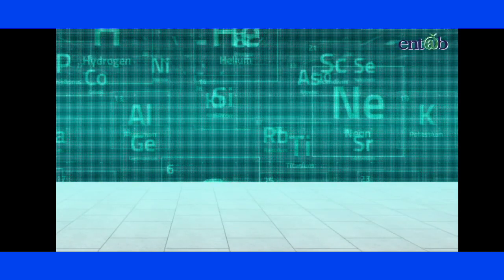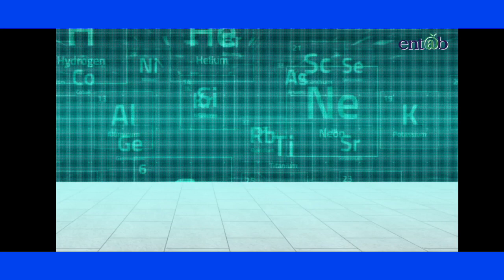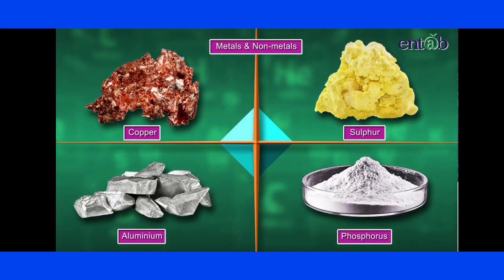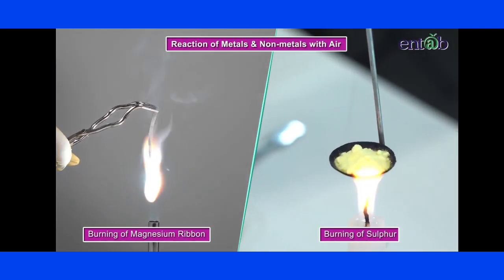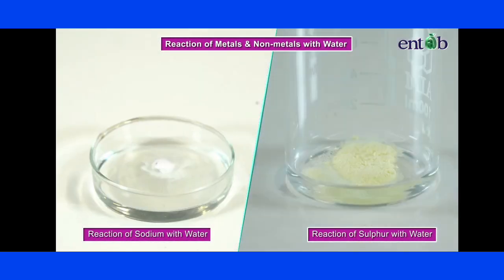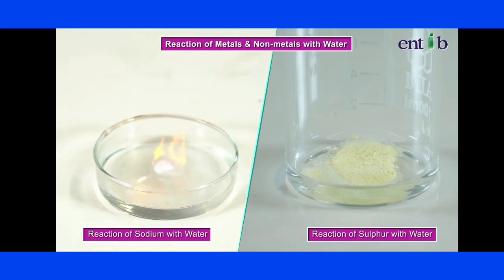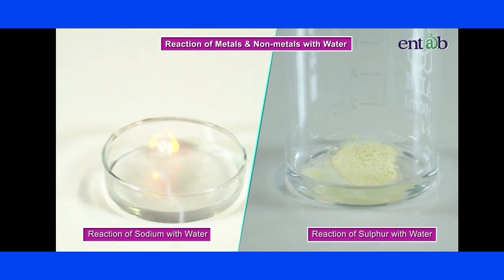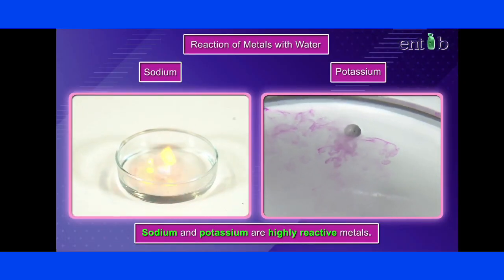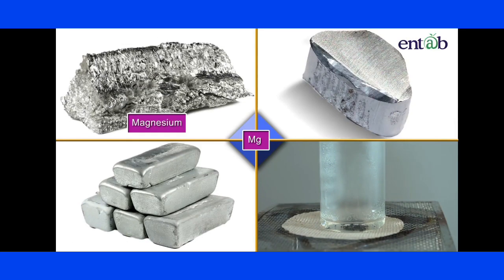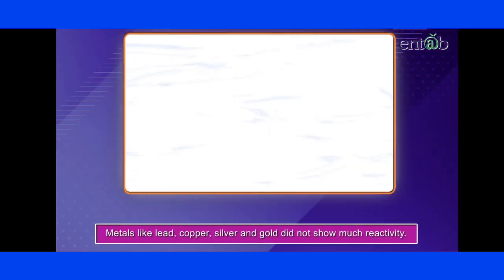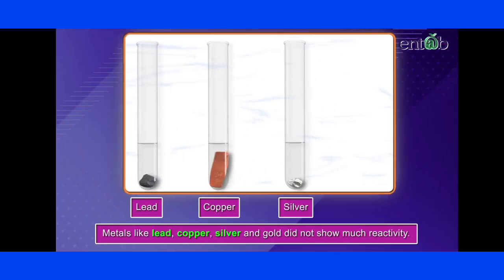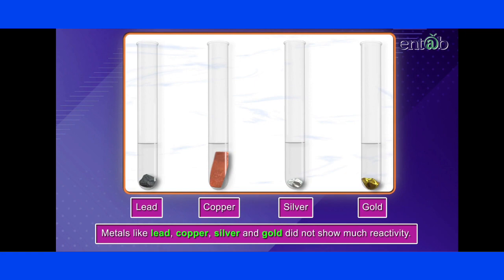Hello everyone. In our previous modules, we have learned about how metals and non-metals behave with air and water. These reactions helped us to deduce that sodium and potassium are highly reactive metals, followed by magnesium, aluminium, zinc and iron. Metals like lead, copper, silver and gold did not show much reactivity.